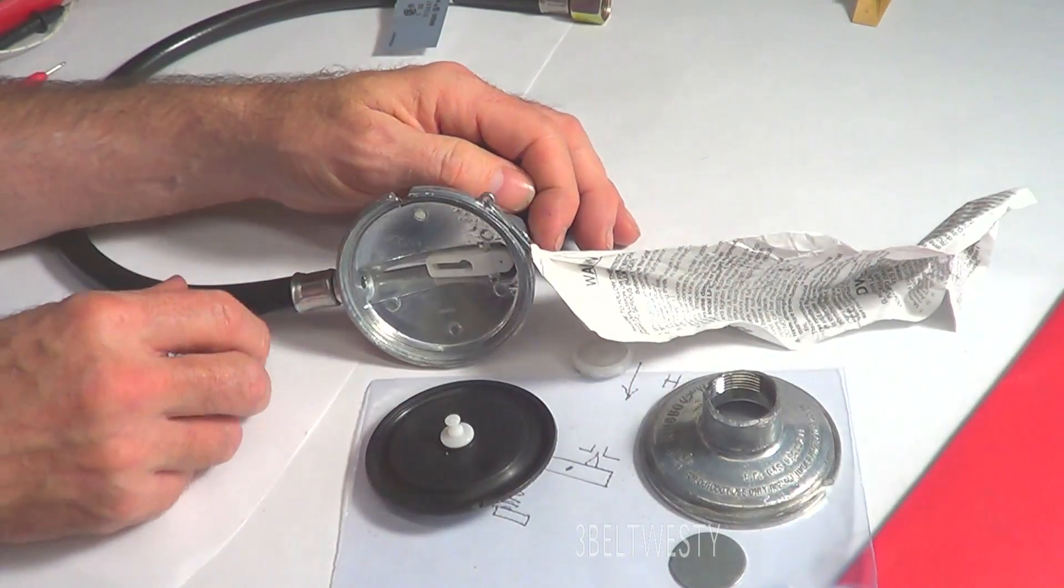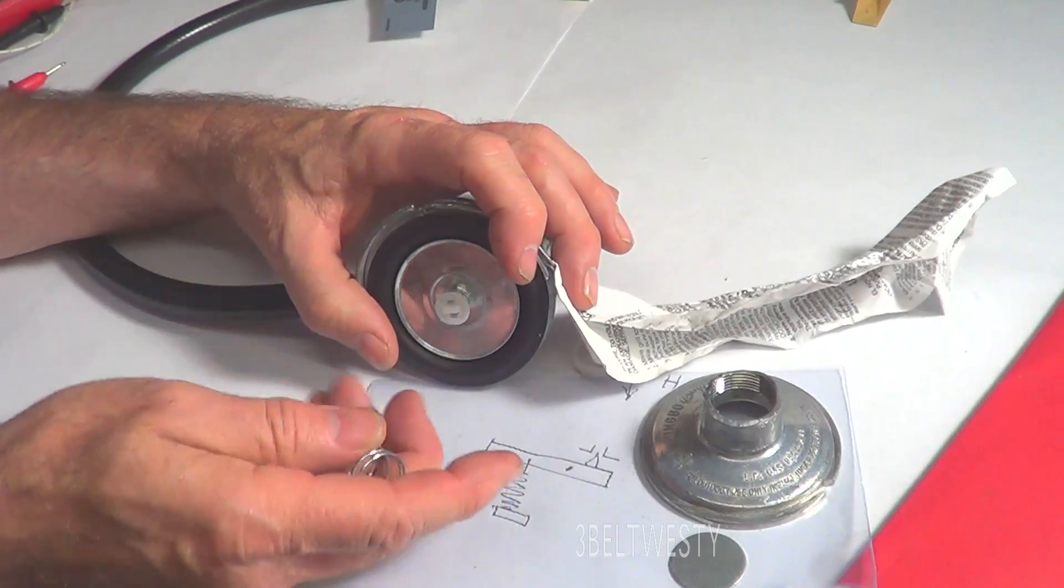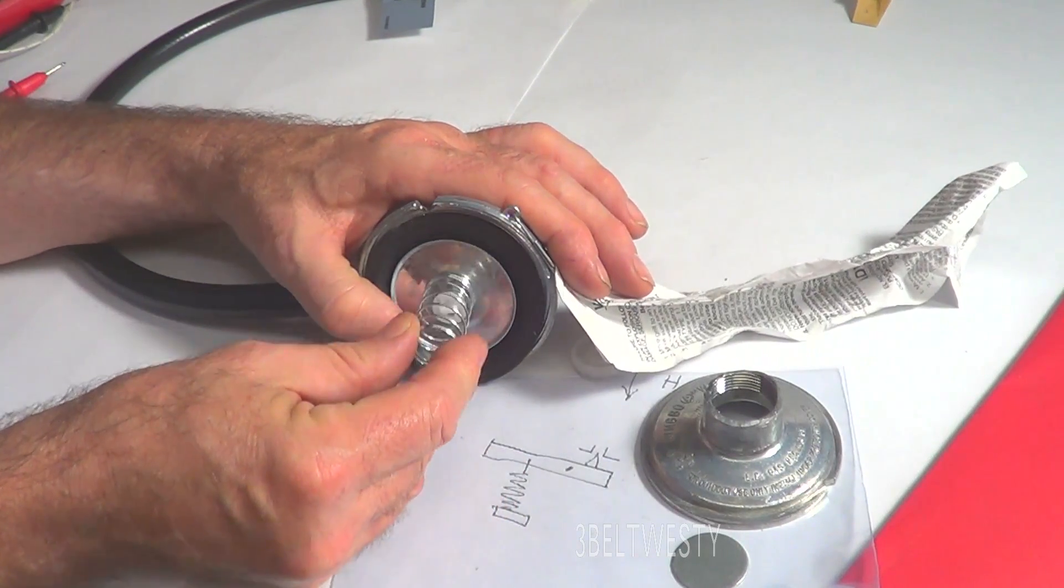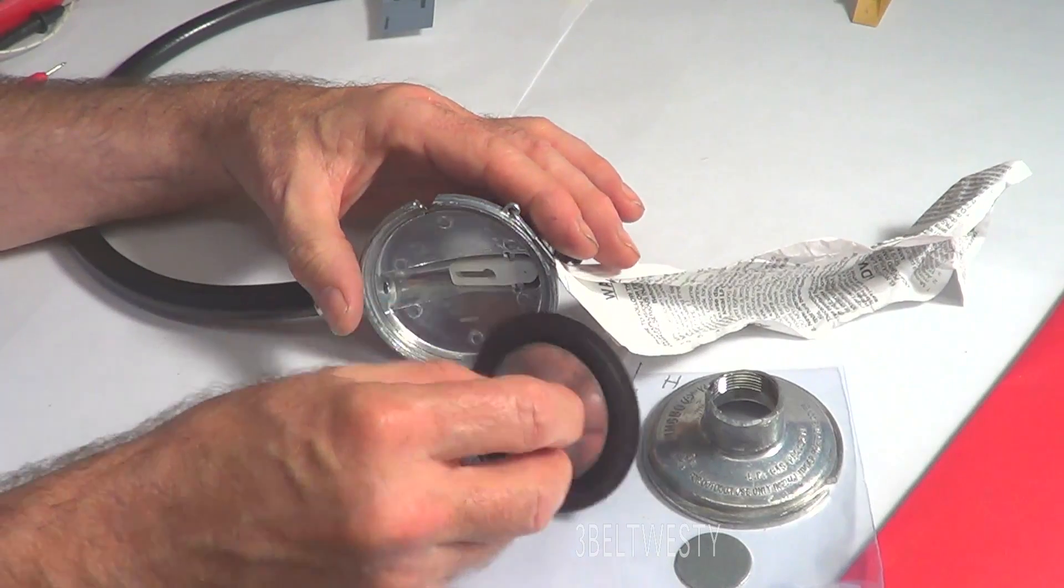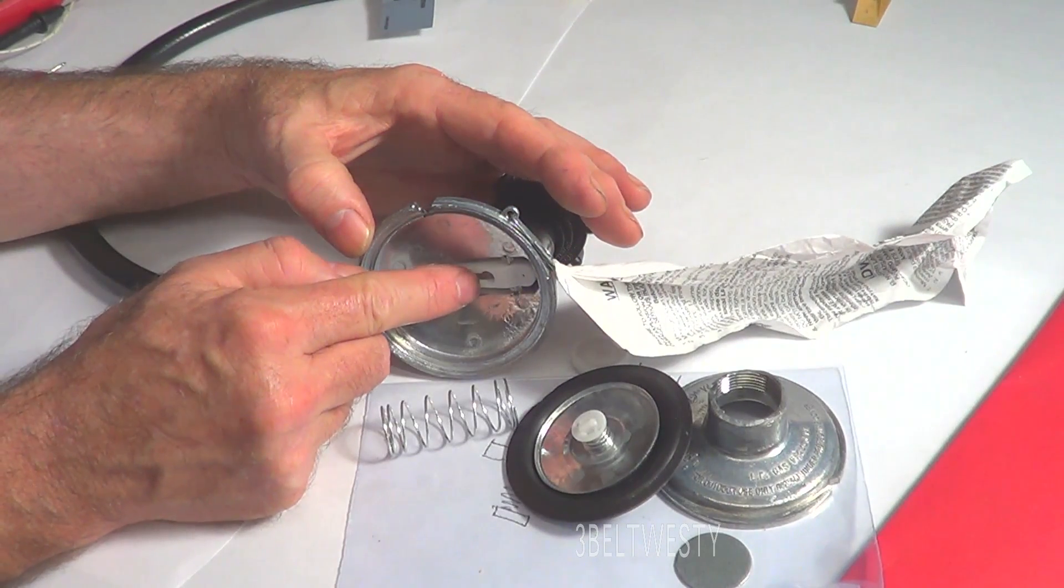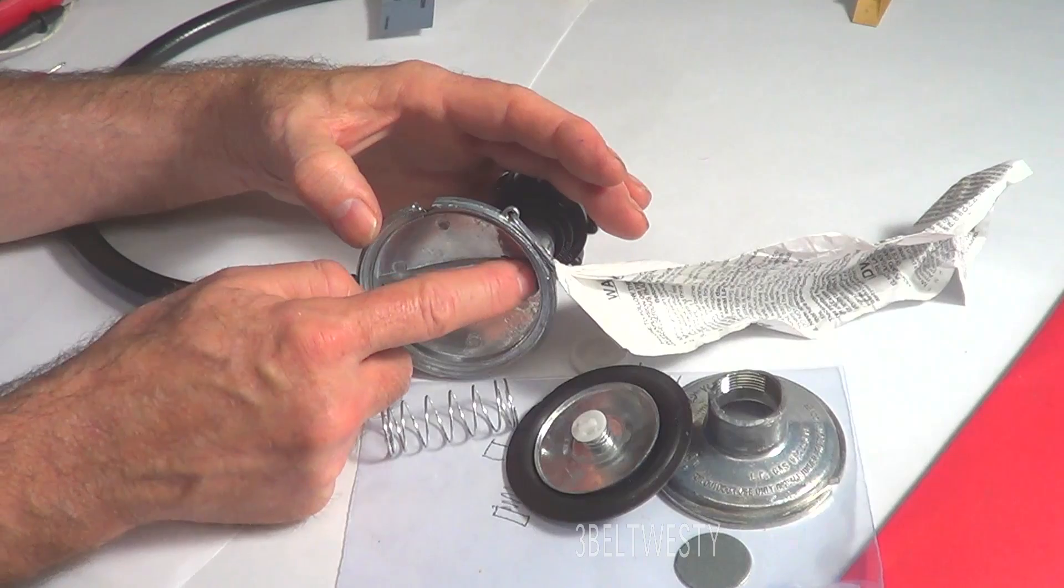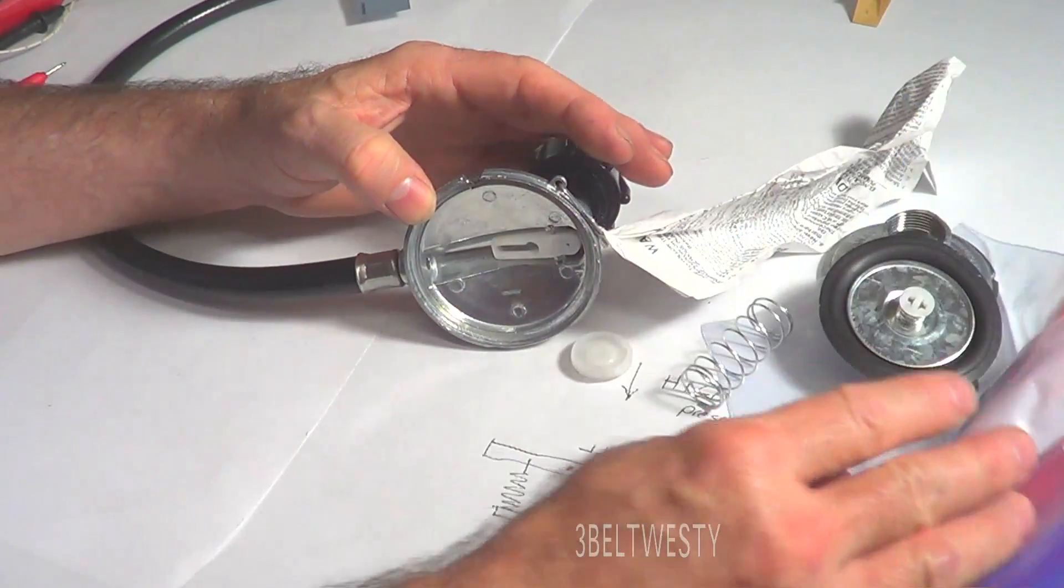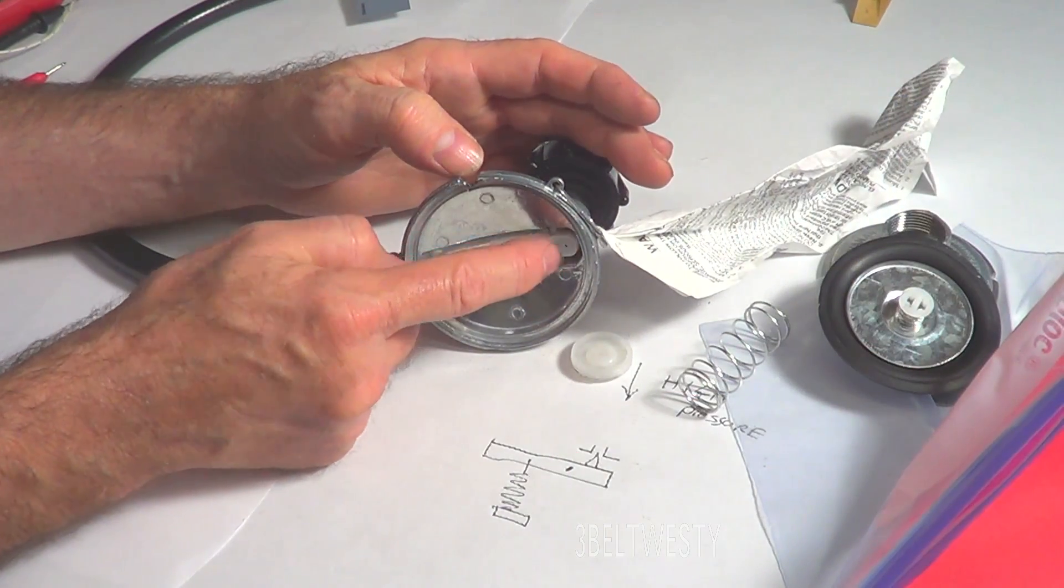But normally what happens is the diaphragm's on here, the spring, this lazy spring is pushing on this, and it's going through and adjusting this little valve that's in here like this that regulates the flow.